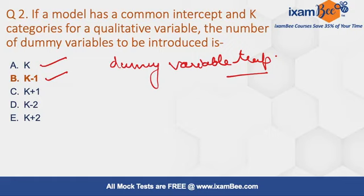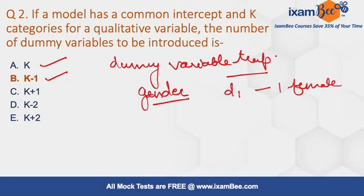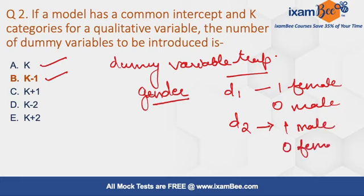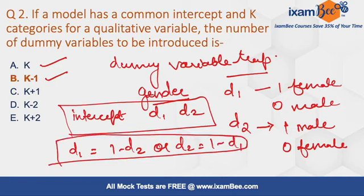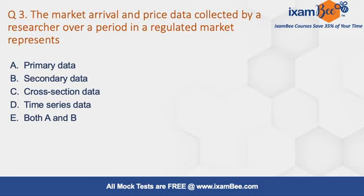For example, if we are taking dummies for gender: D1 takes the value 1 for female and 0 for male, and D2 takes the value 1 for male and 0 for female. In the matrix with intercept, D1, and D2, you can verify that D1 equals 1 minus D2, or D2 equals 1 minus D1. This is a perfect collinear relationship — the dummy variable trap. So the correct answer is k minus 1 dummies.